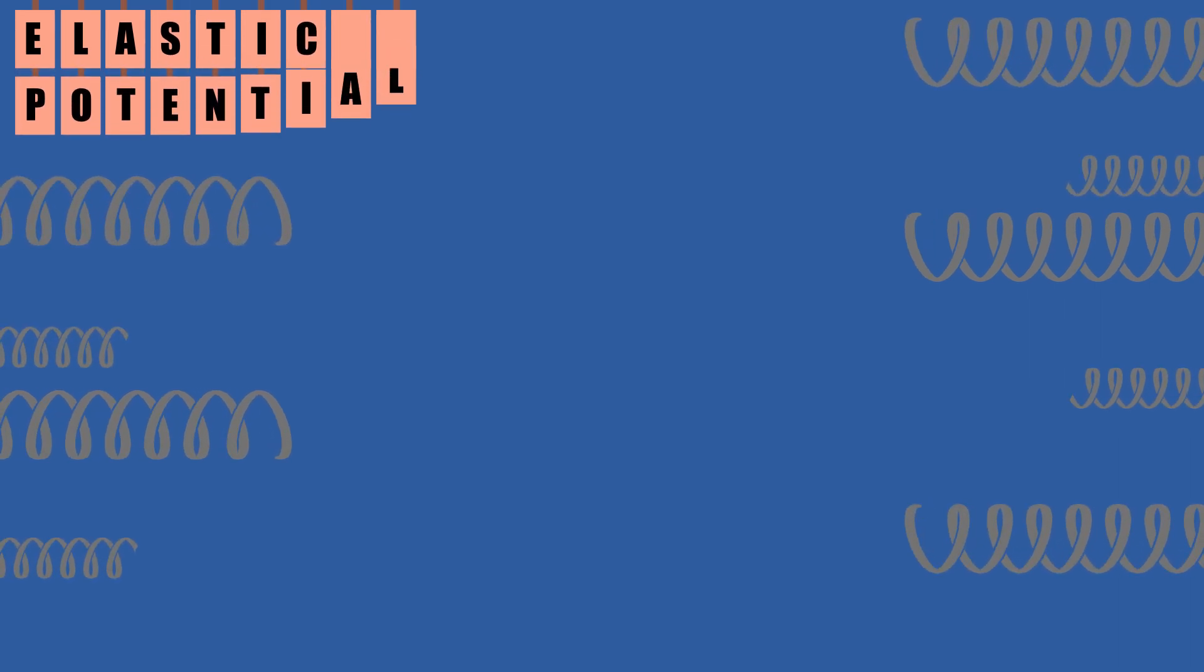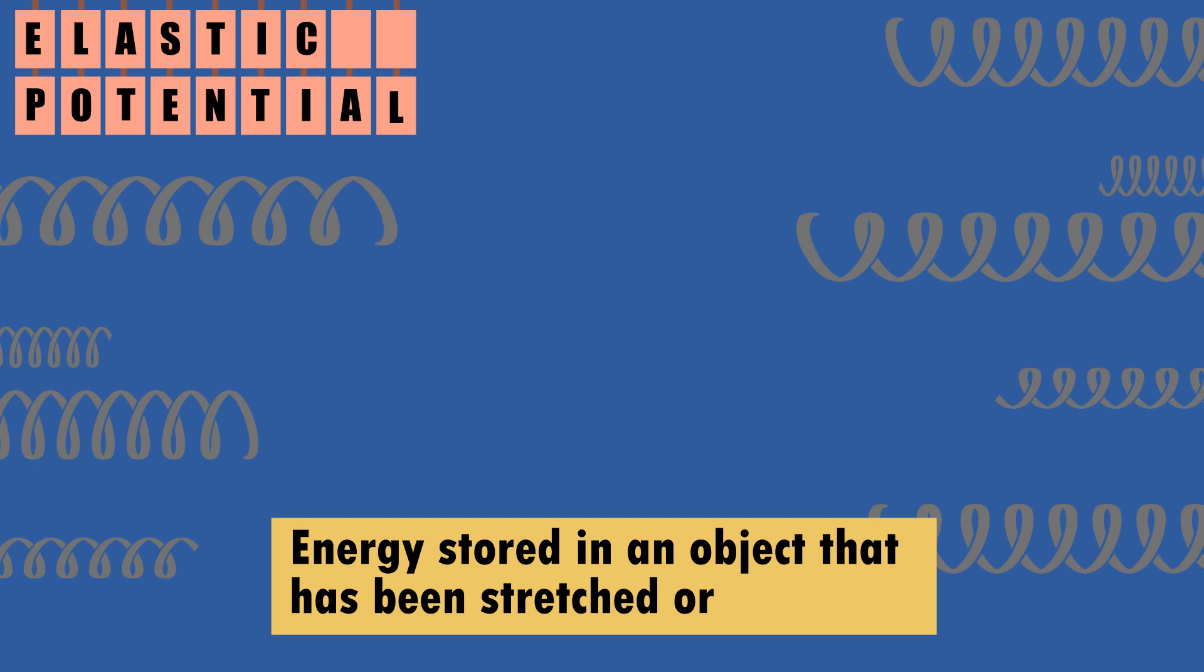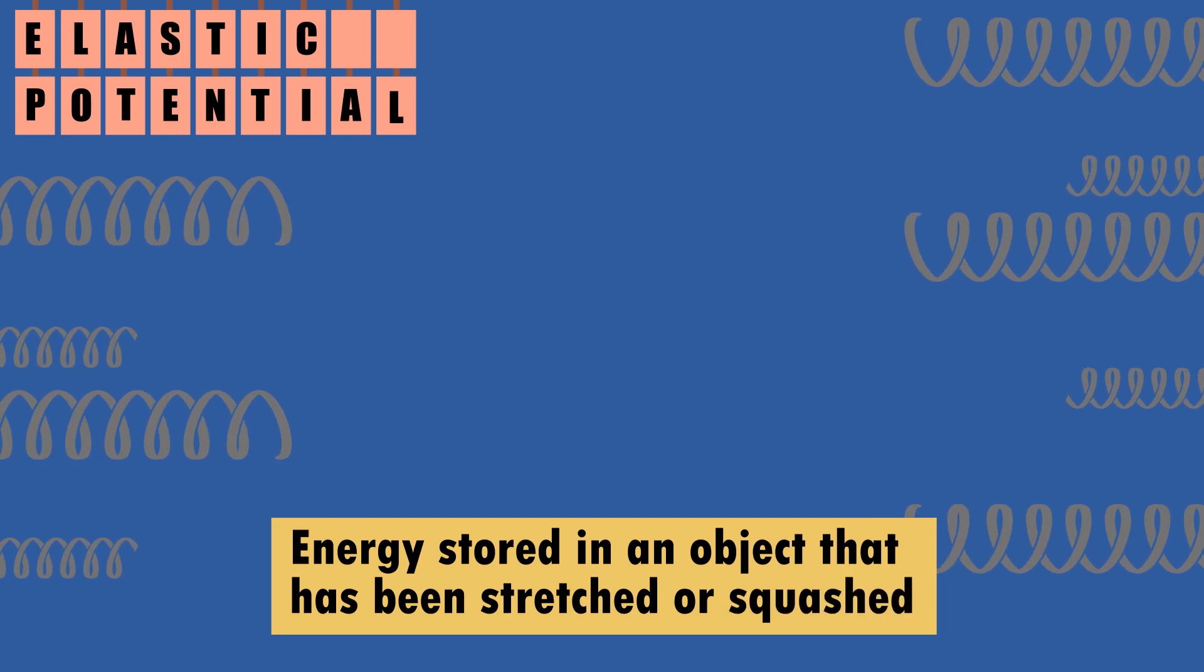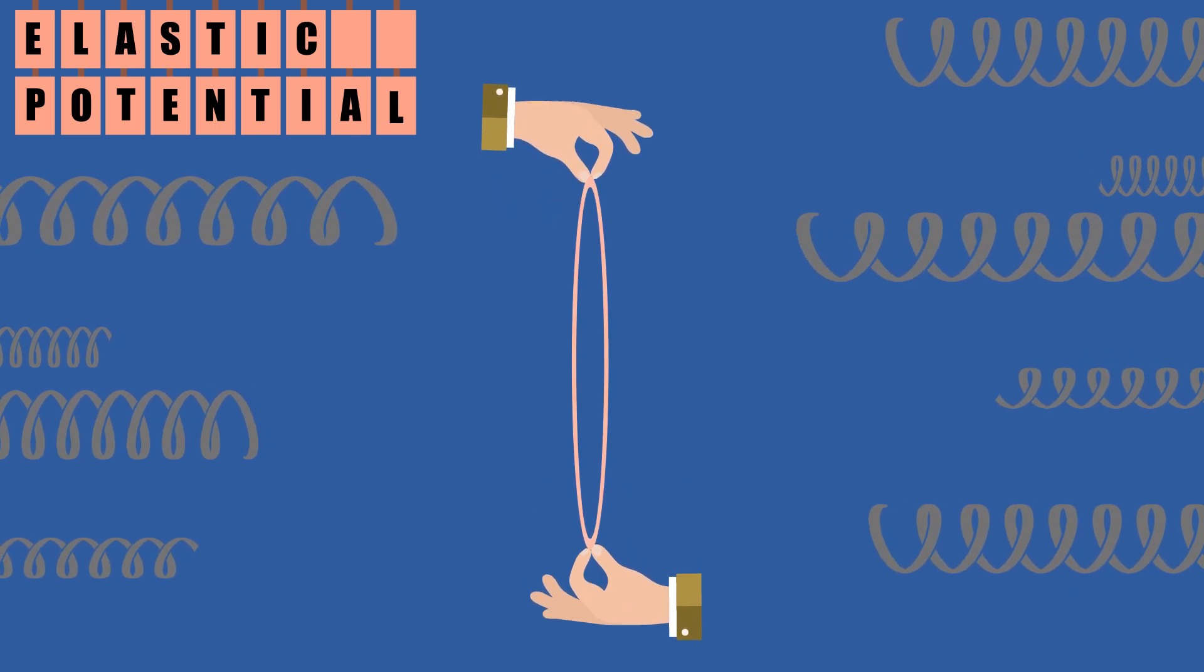Elastic potential. This is the energy stored in an object that has been stretched or squashed. A compressed spring or a stretched elastic band are examples of elastic potential.